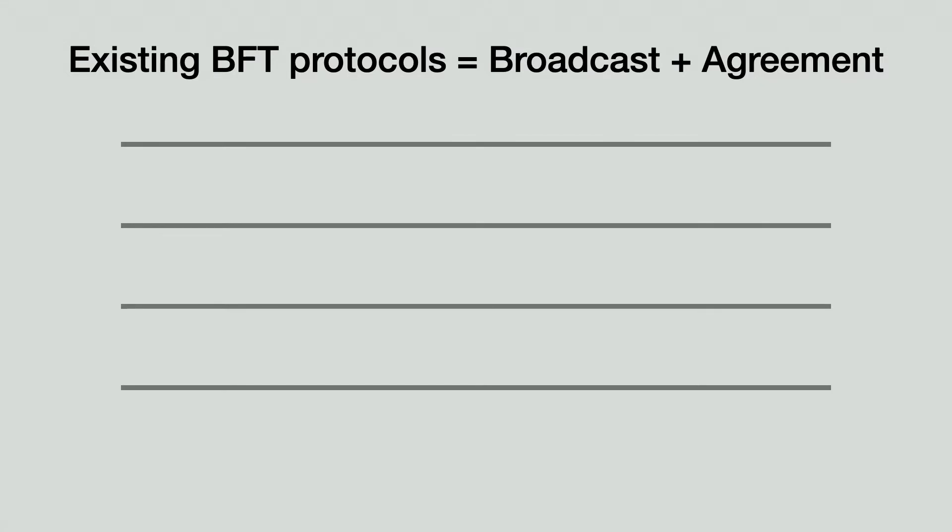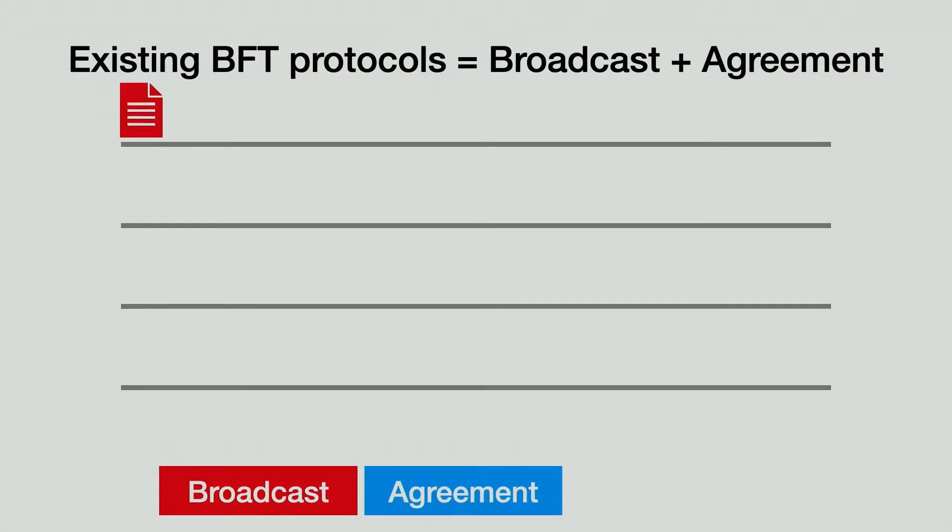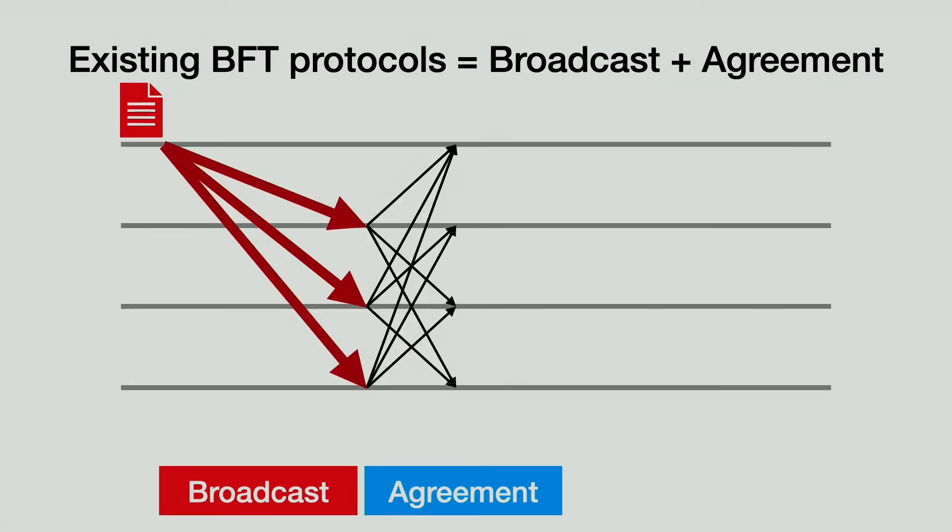To see why variability poses a challenge, we need to understand the construction of a BFT protocol. BFT protocols operate in epochs. Each epoch atomically appends a new batch of transactions to the log. There are two phases in an epoch: a broadcast phase and an agreement phase. In the broadcast phase, a batch of transactions, which we call block, is proposed, and everyone downloads the block. Then in the agreement phase, nodes exchange votes to decide if they're going to append that block.